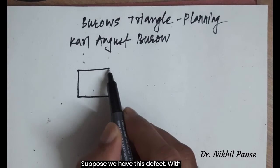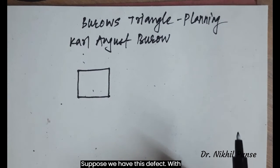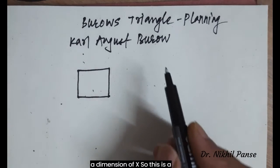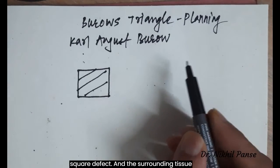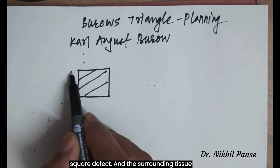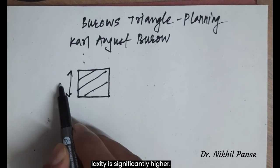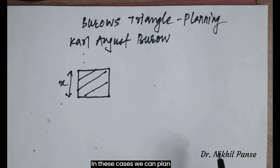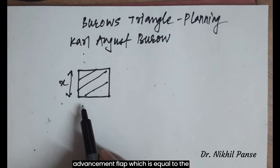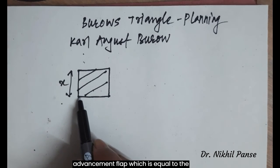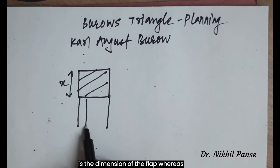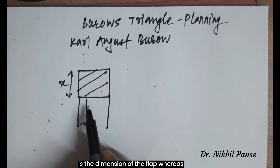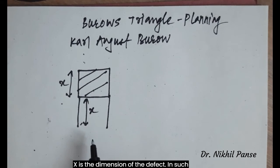Suppose we have this defect with a dimension of x. This is a square defect, and when the surrounding tissue laxity is significantly higher, we can plan an advancement flap equal to the dimensions of the defect. So x is the dimension of the flap, whereas x is also the dimension of the defect.